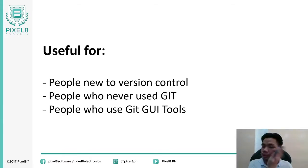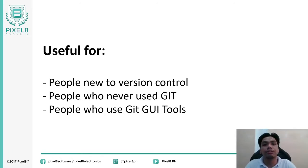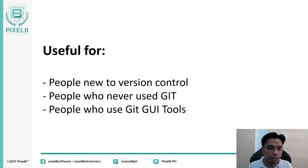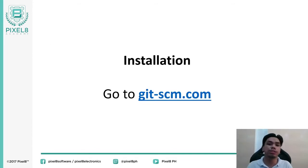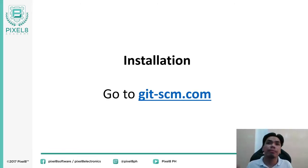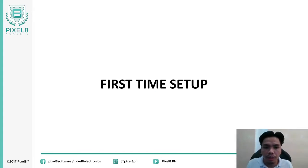Git is useful for those who are new to version control, for people who have never used Git, and also for those who use Git GUI tools, because Git is mostly used in a terminal but it does also have UI applications available. For installation, you simply go to git-scm.com, download the latest version for your operating system, and install it. After that, you now have an instance of Git on your laptop or machine.